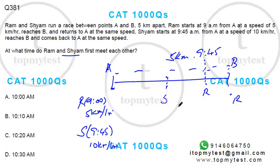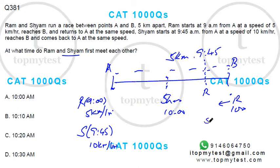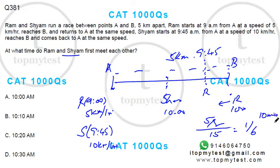At 10 o'clock, Ram has turned back. Now it's a simple application of relative speed. They need to cover half of five kilometers — that's 2.5 km — and their relative speed is 10 plus 5, which is 15 km/h. So the time is 2.5 divided by 15, which is one-sixth of an hour — that's 10 minutes. So they first meet at 10:10. Option B is the correct choice.